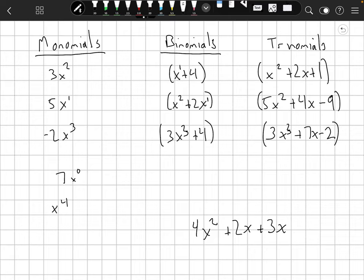Notice that the biggest exponent always, that term always comes first or on the left and it goes from left to right. Okay, let's look at some trinomials. We've got x squared plus 2x plus 1. We've got 5x squared plus 4x minus 9. We've got 3x cubed plus 7x minus 2. So we've got three terms for each of these. They're called trinomials.